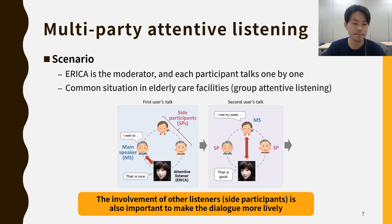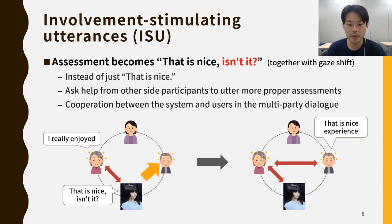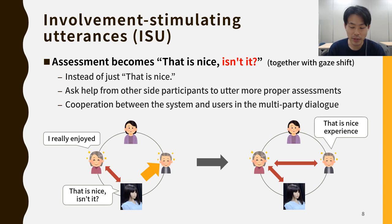We modify the assessment responses for the multi-party scenario. In the previous system, the assessment response was like 'that's nice,' but its variation was limited. In the proposed multi-party system, the assessment response becomes 'that's nice, isn't it?' We call these responses Involvement Stimulating Utterances. The system asks help from other side participants to utter more proper assessments. For example, the side participant would say 'that's a nice experience,' which was difficult to generate autonomously. Since the side participants are allowed to join as listeners, the whole dialogue becomes more activated.